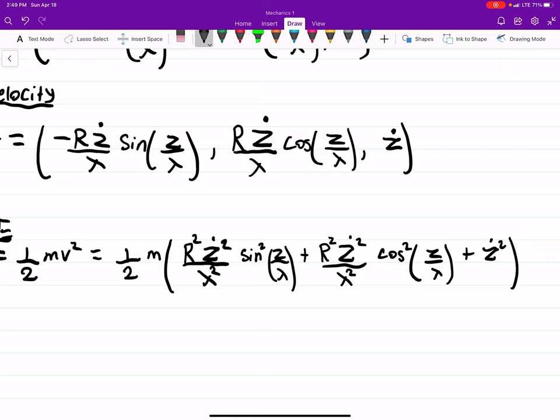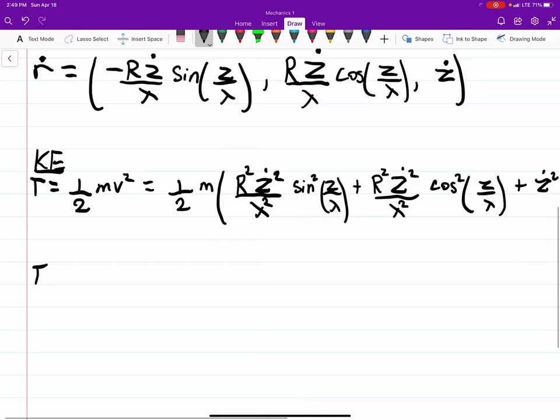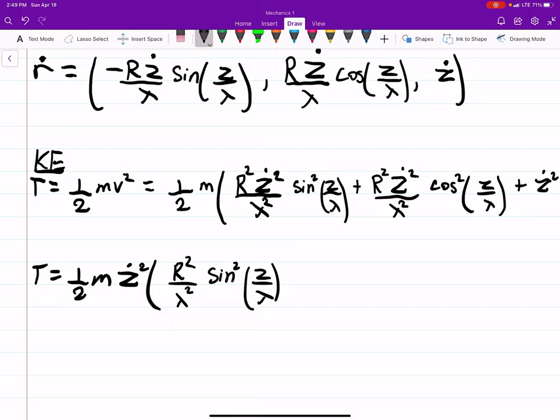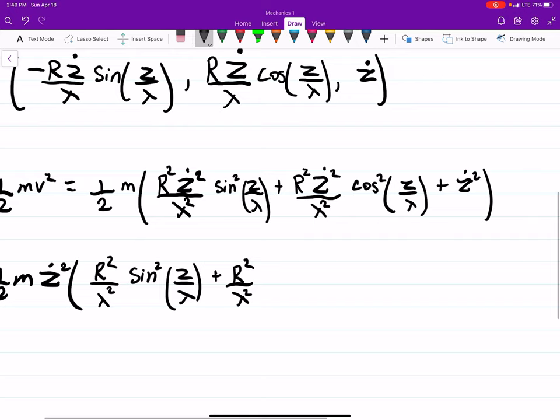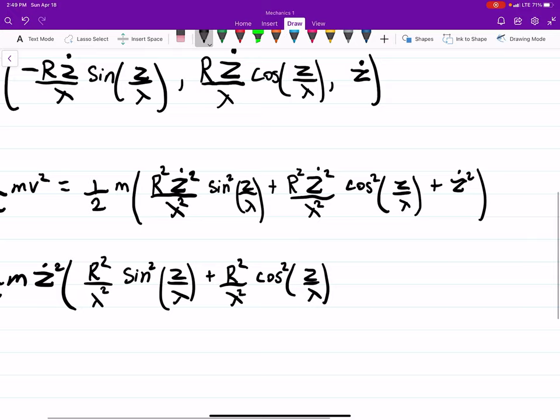I see they have a z dot squared in all of them, so I'm going to factor that out. So T is one half m z dot squared, and then we're left with R squared over lambda squared sine squared z over lambda.